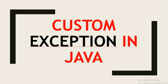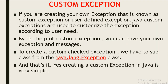Welcome back to this channel. Today we are going to discuss how we can create our own custom exception in Java. Custom exceptions in Java are also known as user-defined exceptions. If you are creating your own exception, that is known as a custom exception or user-defined exception. Java custom exceptions are used to customize the exception according to the user's need. By the help of custom exception, you can have your own exception and messages.